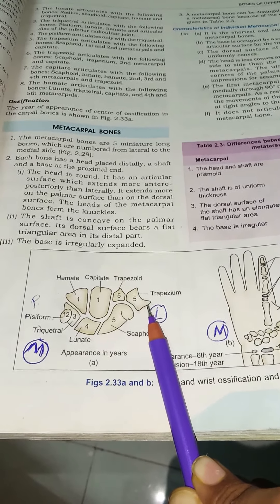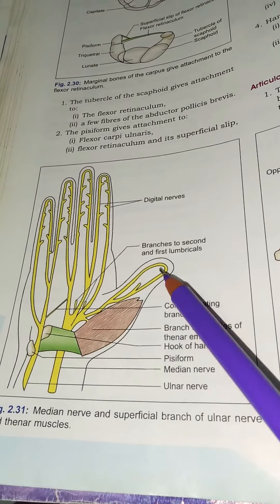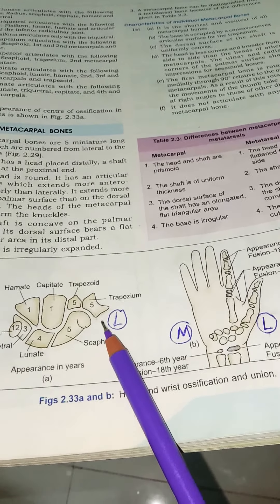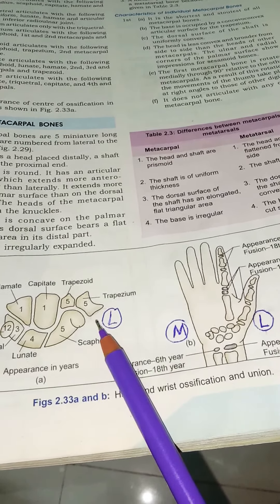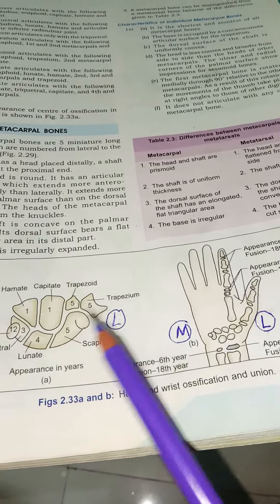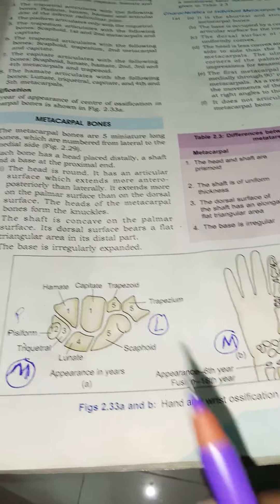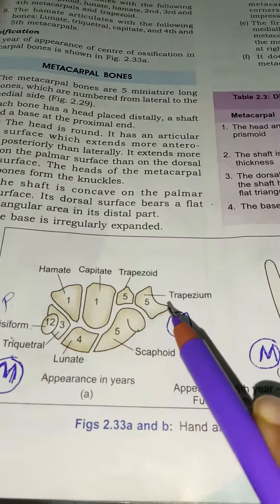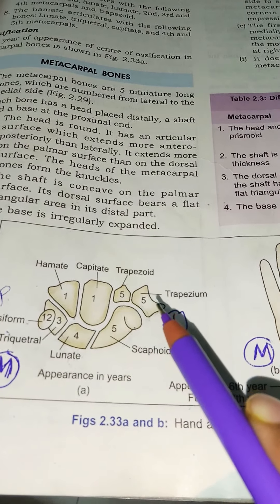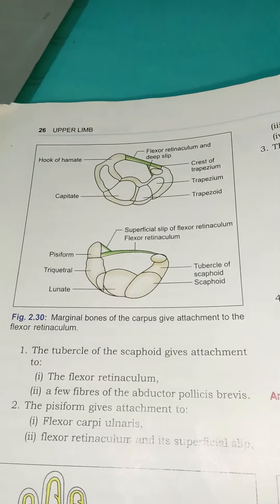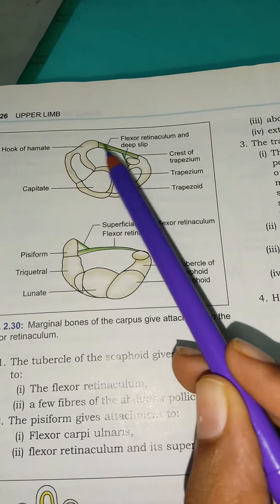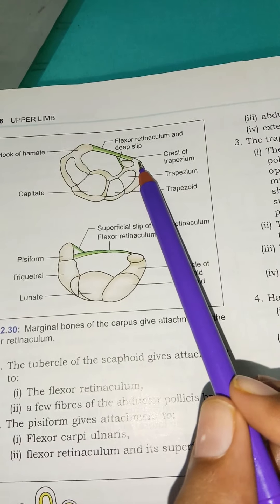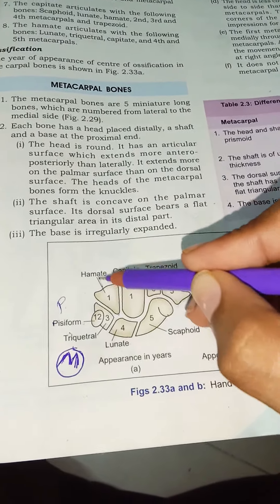The trapezium's crest gives origin to the thenar eminence muscles: abductor pollicis brevis, flexor pollicis brevis, and opponens pollicis — all named 'pollicis' because they go to the thumb. The edges of the groove give attachment to two layers of flexor retinaculum. The deep slip of the flexor retinaculum attaches from the hook of hamate to the crest of trapezium.